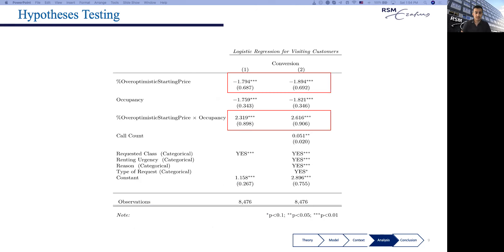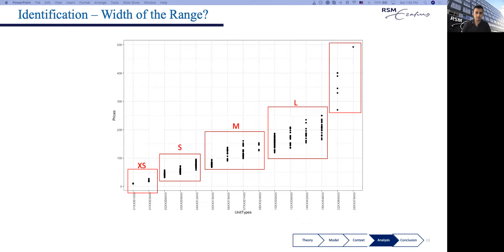Let's look at purchase likelihood or conversion. The first model describes the effect in the absence of control variables. The second model controls for essential variables such as the requested class, renting urgency, the reason they want to rent, whether it's for moving house or hobby-related reasons, and lastly, the type of their request, whether they want a reservation, just a tour, or a price quotation. We see that conversion is negatively correlated with overoptimistic starting prices. The more overoptimistic the starting prices are, the lower the likelihood of purchase. But this negative effect is compensated with high occupancy. When occupancy is high, equivalently when there are low numbers of products to purchase, this negative effect is not there anymore.